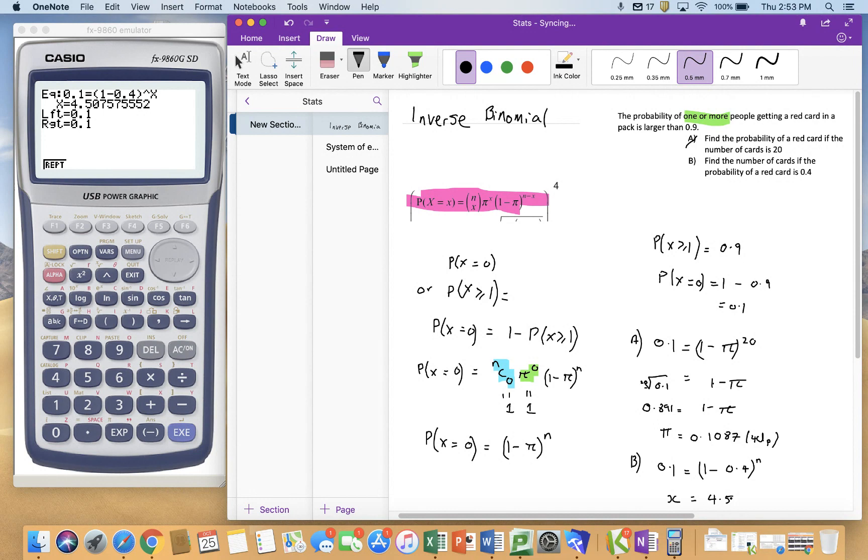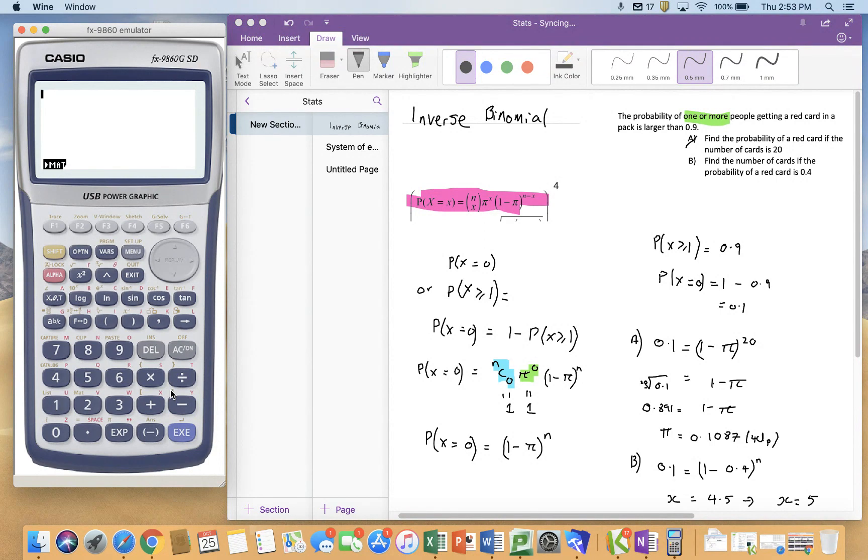Now, my problem with that is, of course, X can't equal 4.5. You can't have 4.5 cards in the pack. So therefore, X must be equal to 5. And this is where I would go back, and I'd go to my calculator bit, and I'd go 0.6 to the power of 4 gives me nearly 13%. So therefore, when I take that away from 1, then that's not going to be high enough. Whereas 0.6 to the power of 5 gives me about 7%, and therefore that, when I take it away from 1, gives me my 90% of 1 or more.